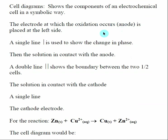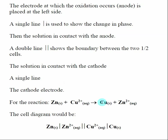Whatever the anode is — be it a metal or a piece of carbon — goes all the way on the left-hand side. In this case, the anode is zinc, so zinc is placed all the way to the left of the cell diagram. Then you put a single line, and the single line shows a change in phase — we're going from a solid into an aqueous solution.